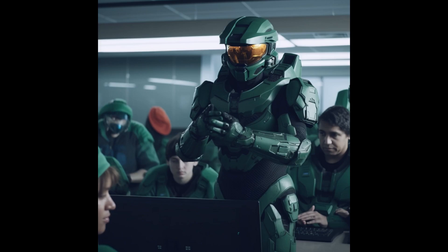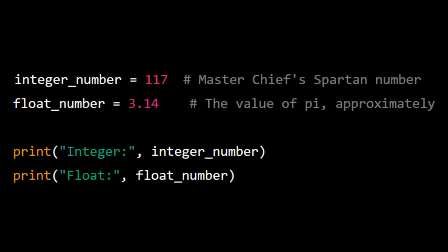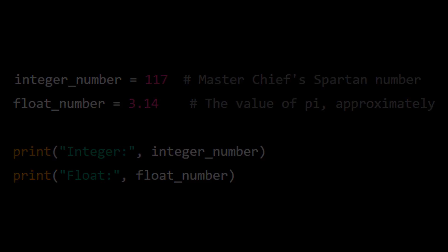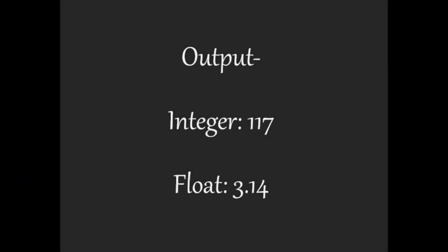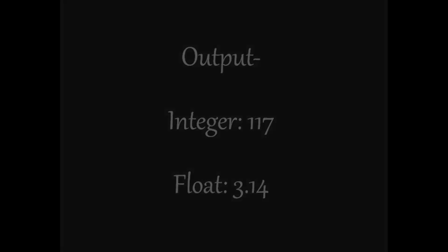Here's an example. integer_number = 117. float_number = 3.14. print("Integer", integer_number). print("Float", float_number).